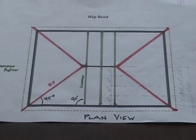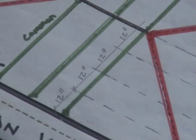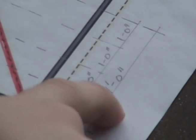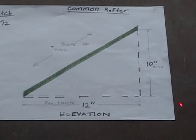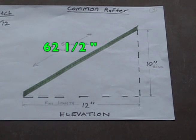Referring to the plan view, we can now determine the amount of board length needed to make our common rafters shown in green. We see that the run length of the bottom member of the common rafter is 4 units of 12 inches, or 48 inches, or 4 feet. The height or rise of the rafter is 4 times 10 inches, or 40 inches. So using the Pythagorean theorem, the length of the sloped member works out to be 62 and a half inches.